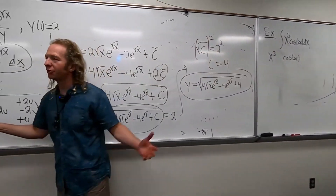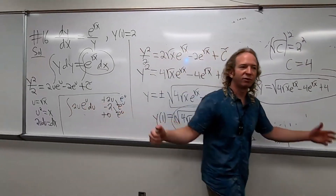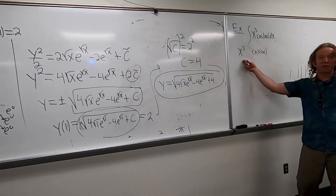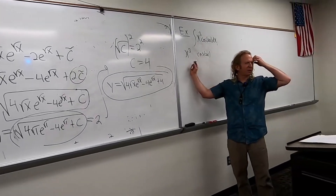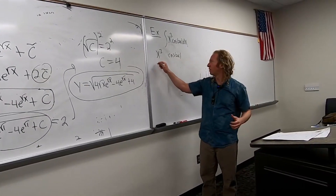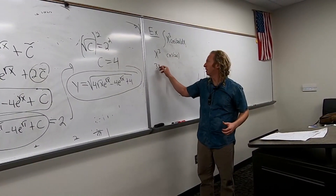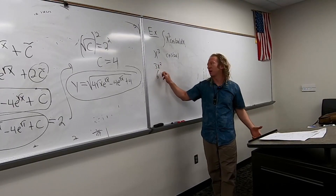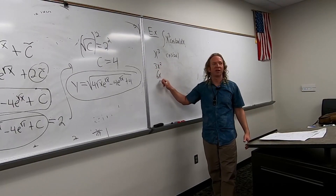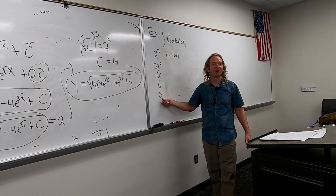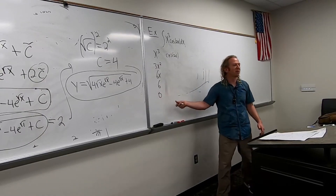And then you just start taking derivatives. The derivative of x cubed — what would that be? 3x squared. And if you do it again, you get 6x, then 6, then 0. And then you stop at zero.